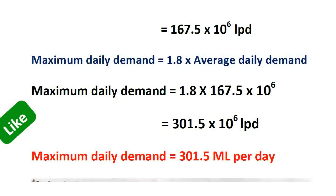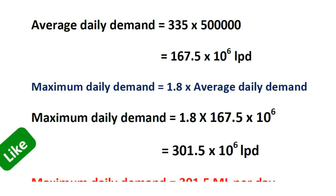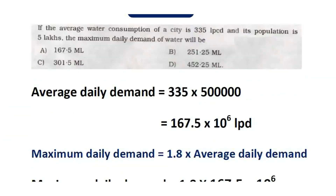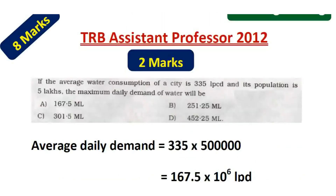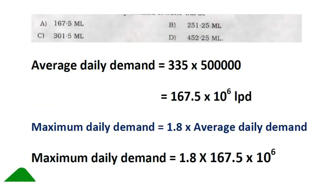Weekly demand factor is 1.48, monthly demand factor is 1.28. The most repeated question: maximum daily demand is equal to 1.8 times the average daily demand. This is the same formula.